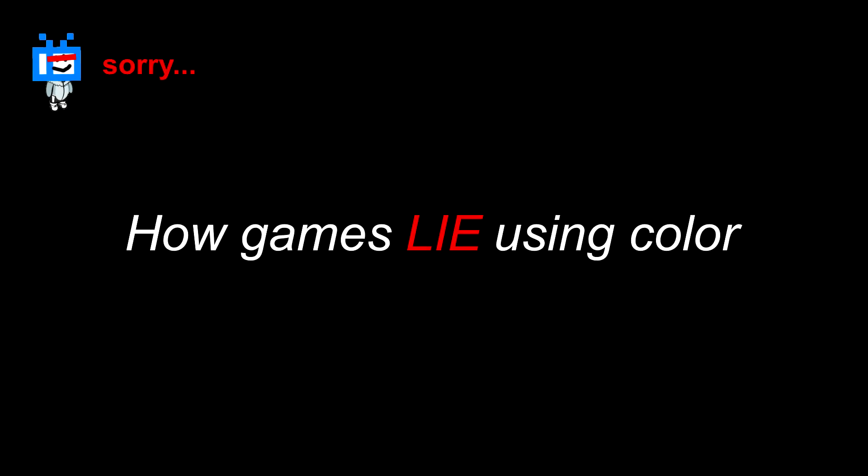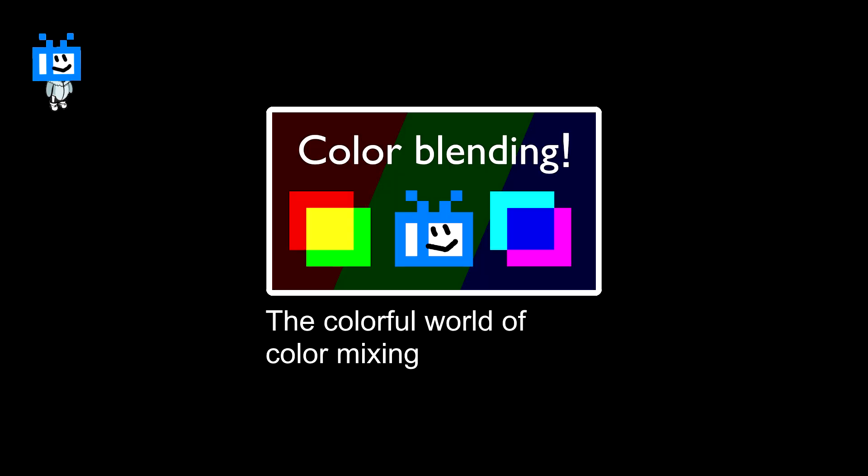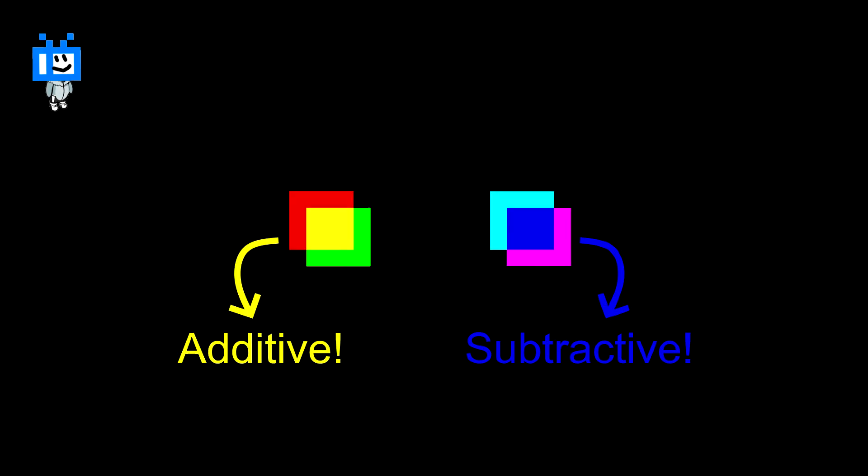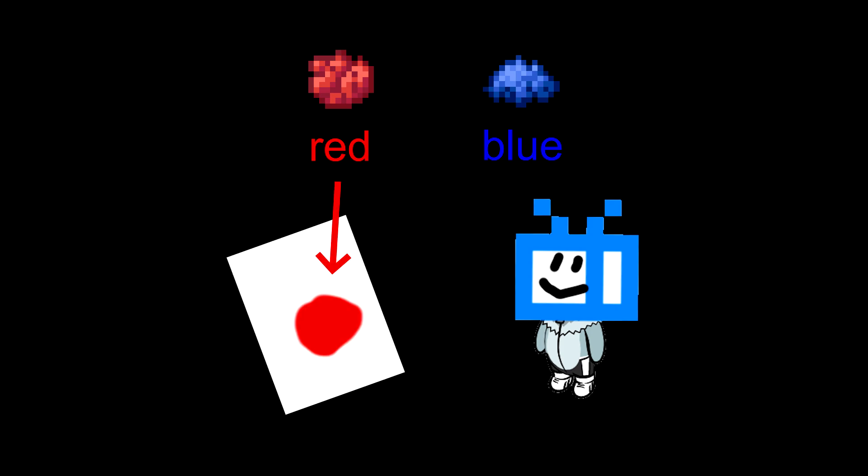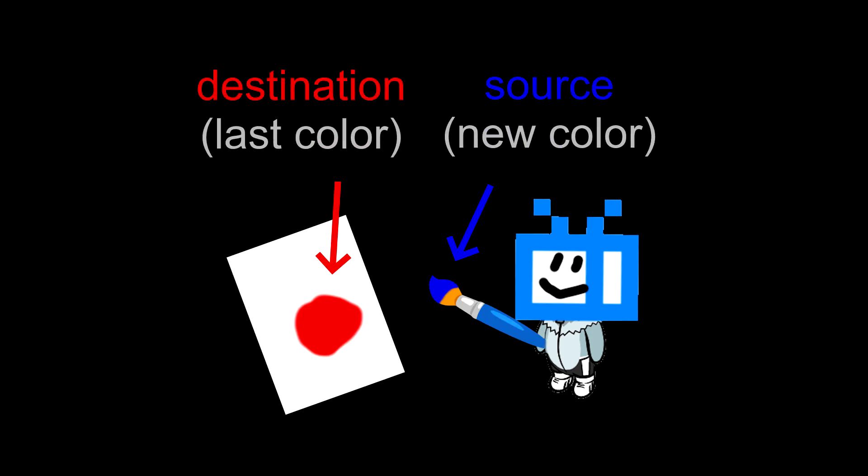I do apologize for the clickbait title, but it is not clickbait, so I guess I'm gonna take my apology back. In this video I talked about additive and subtractive color mixing, and just to recap, let's say you have two colors. One of them is already on the paper and the other one is still on your brush. These are called the source and destination colors, which sound confusing, but they do make sense.